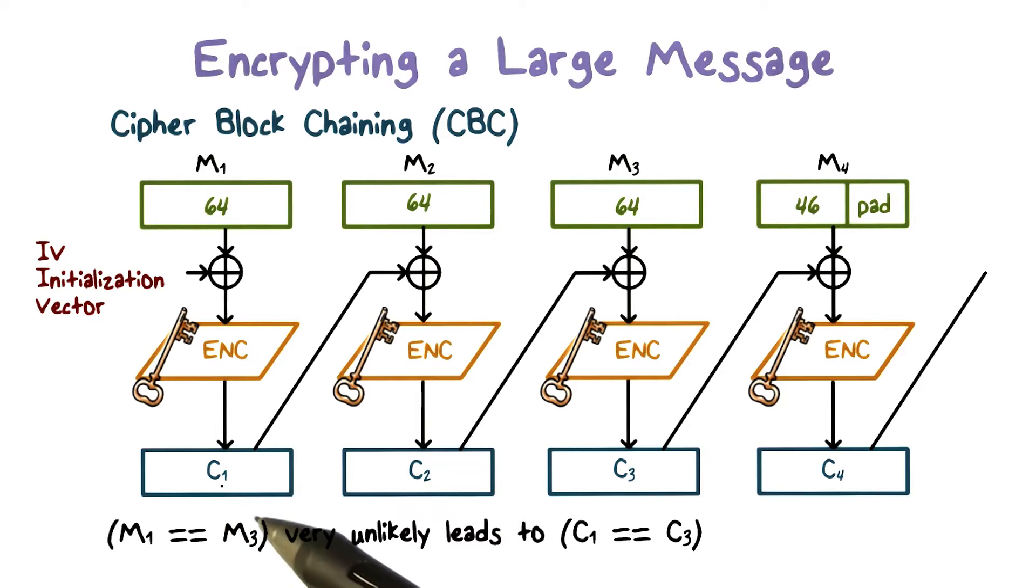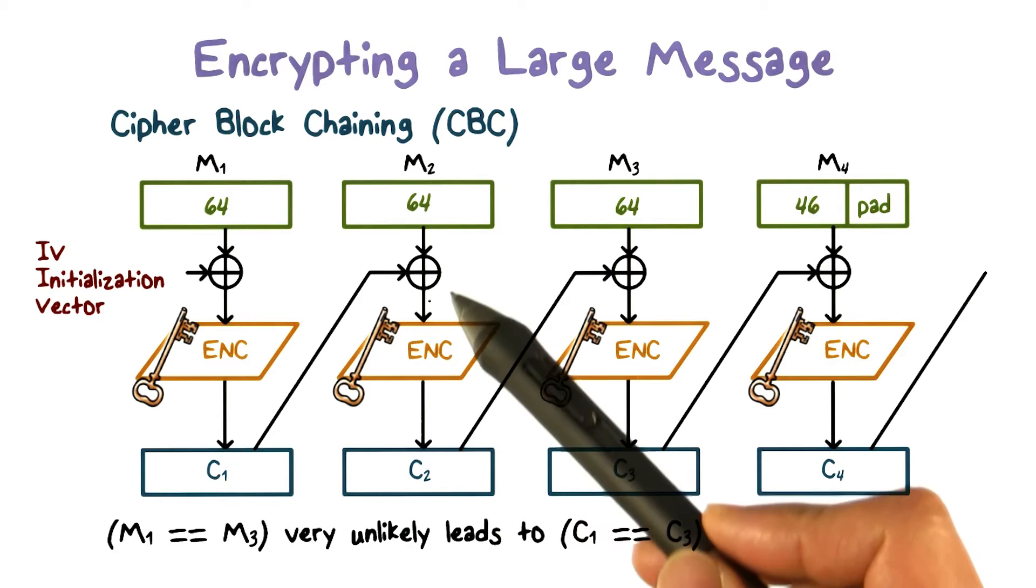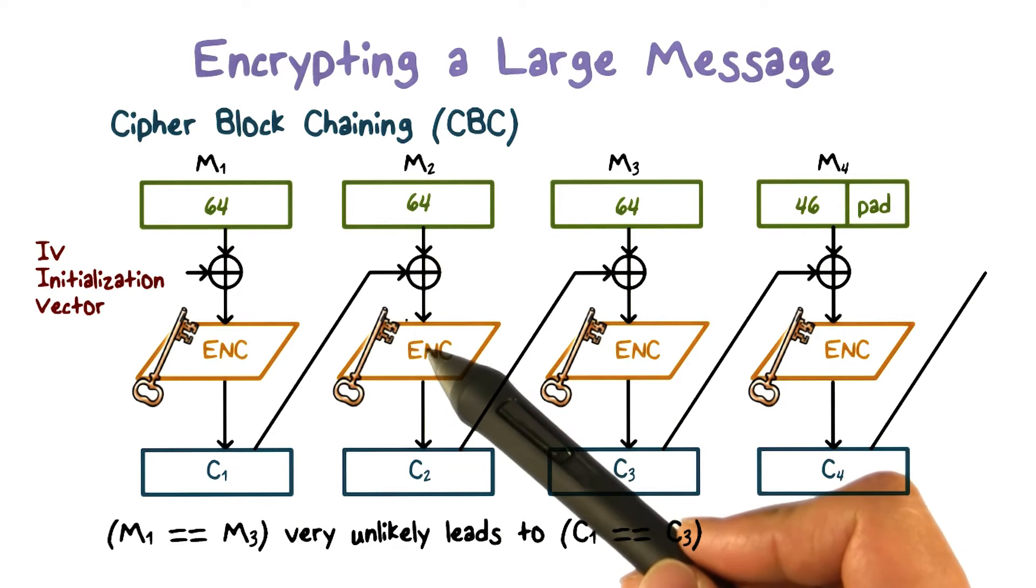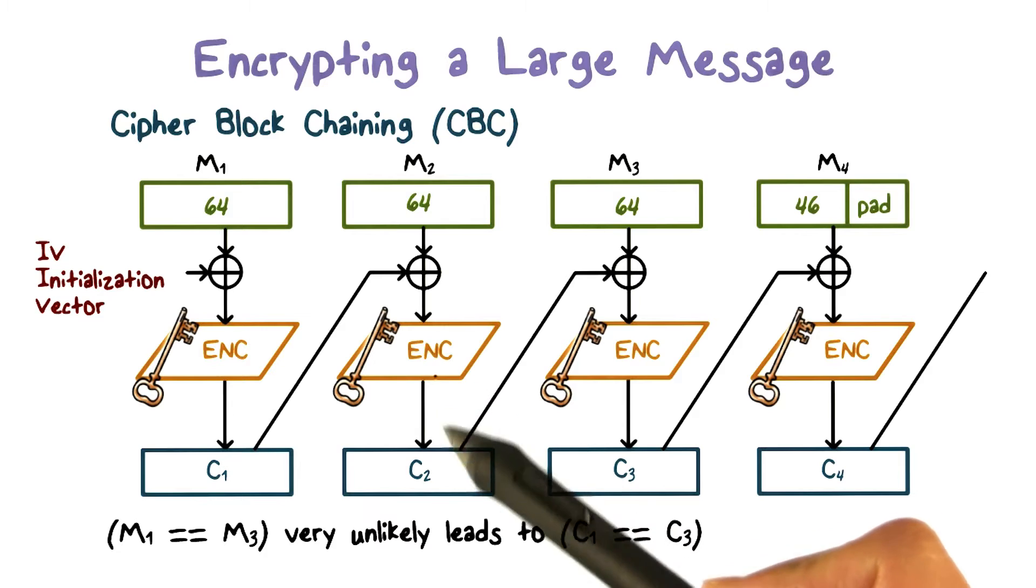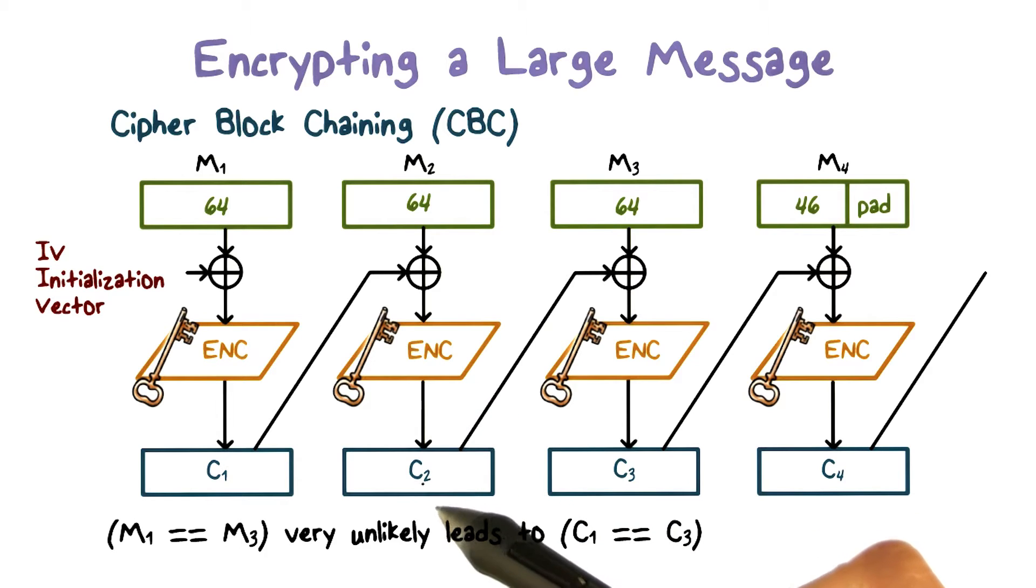Then, the first ciphertext block is XORed with the second plaintext block as input to the encryption process to produce the second ciphertext block, and so on.